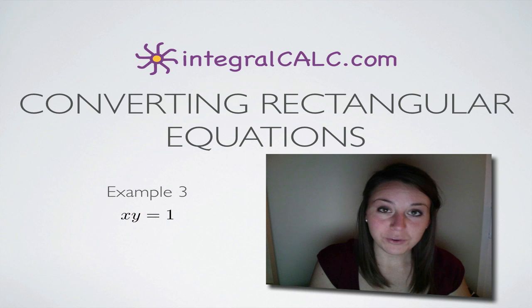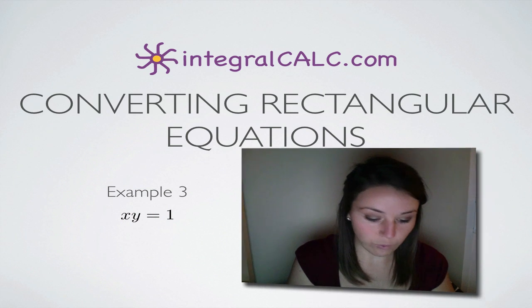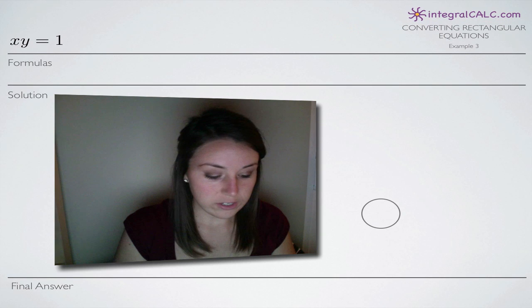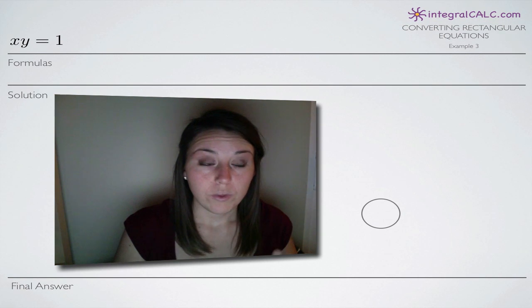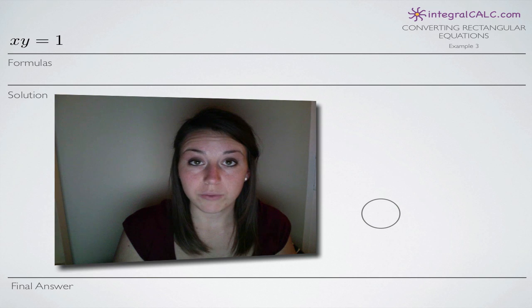The rectangular equation that we're given is x times y equals 1. Remember that with rectangular equations, the equation will be in terms of x and y variables. With a polar equation, it's going to be in terms of r and theta.